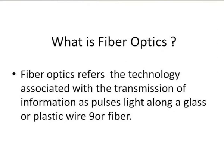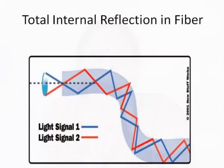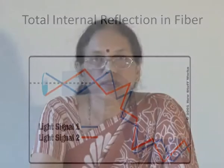Fiber optics is that branch of physics which deals with the transmission of signals in the form of pulses of light. The principle involved is a very old one — total internal reflection. This total internal reflection was found long ago, but it was put into practical use only in the 19th century through these optical fibers.